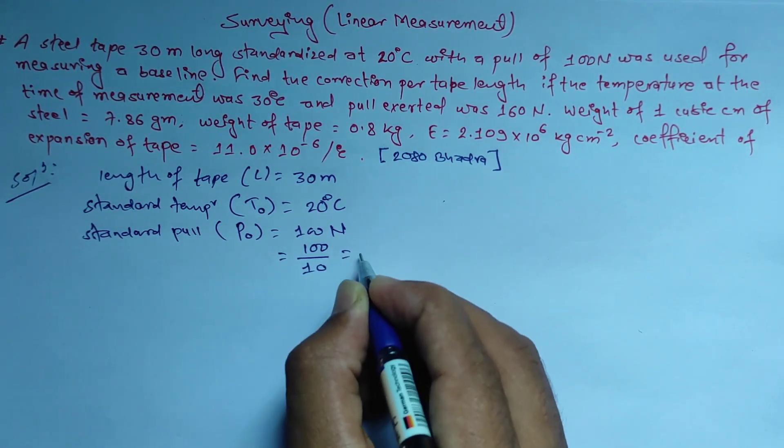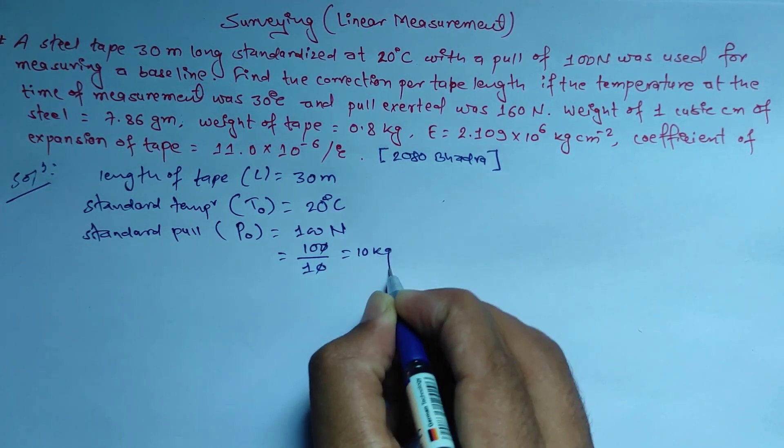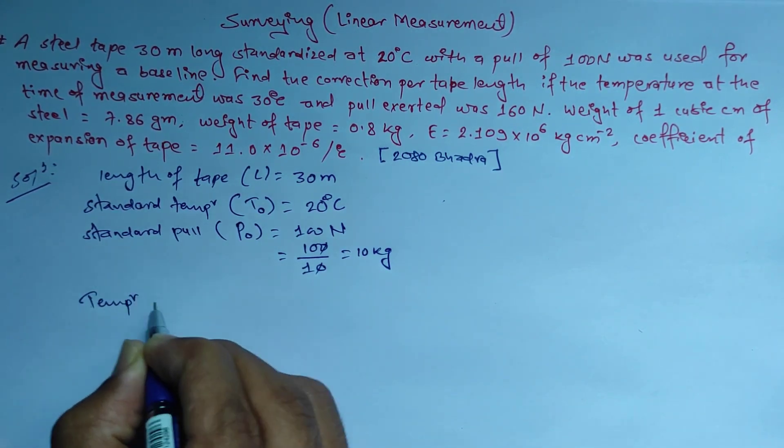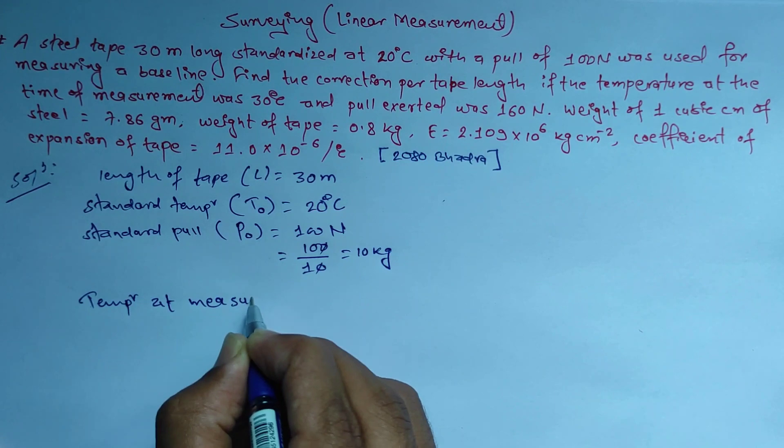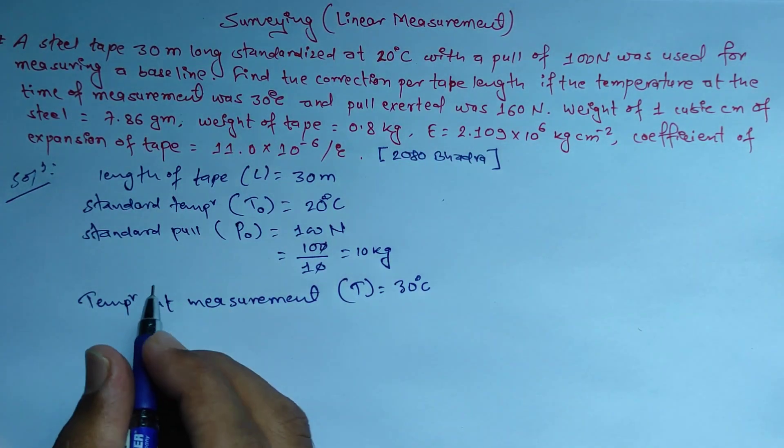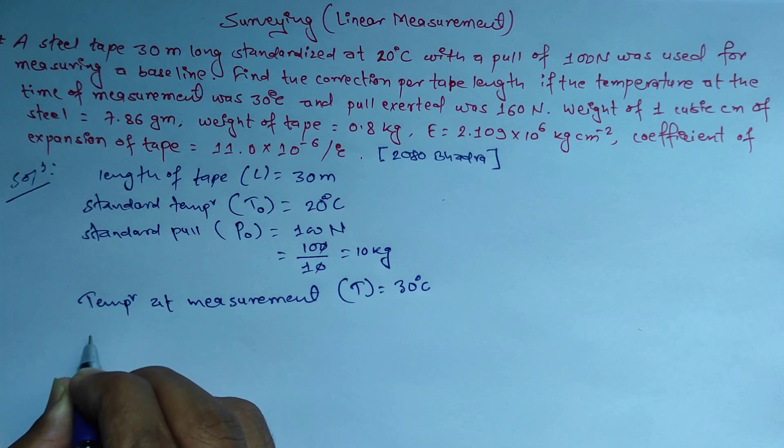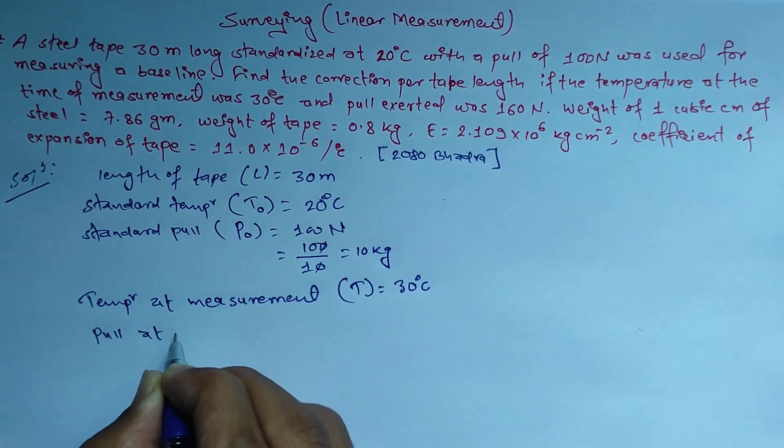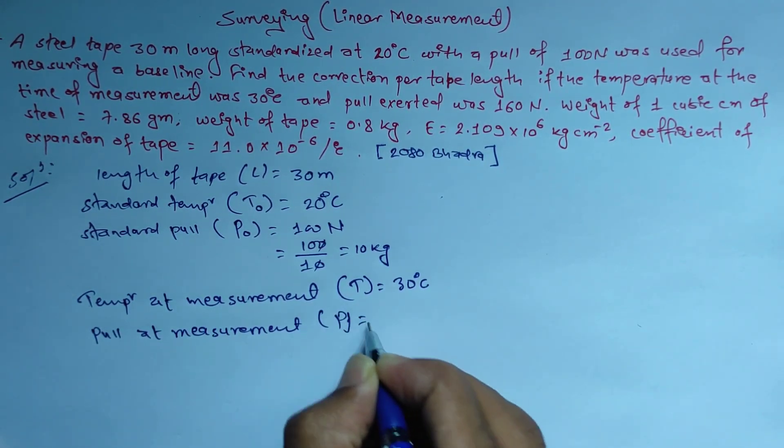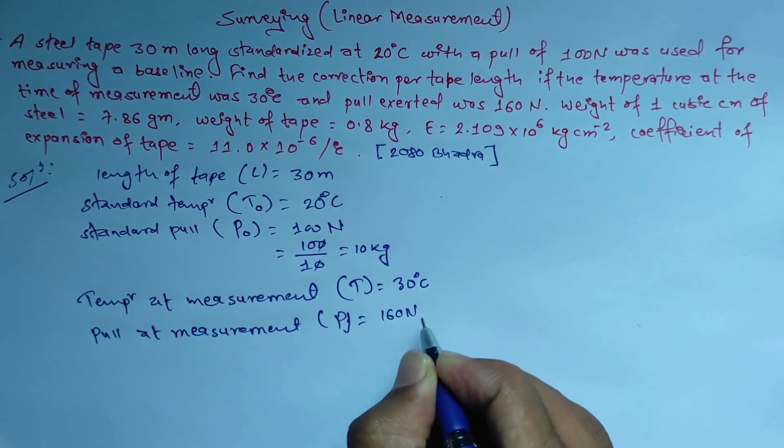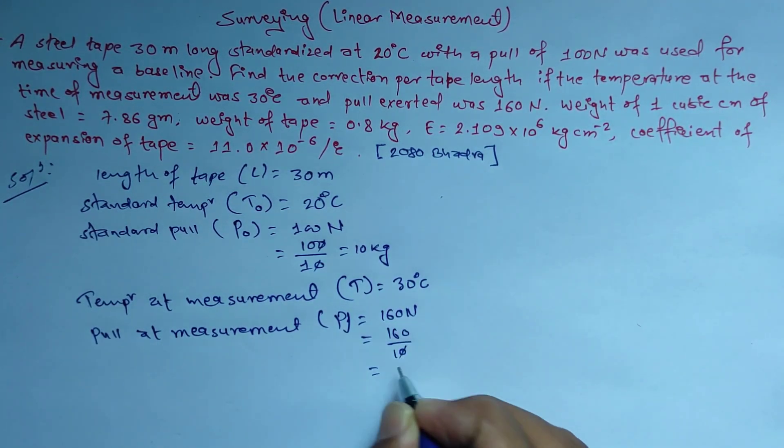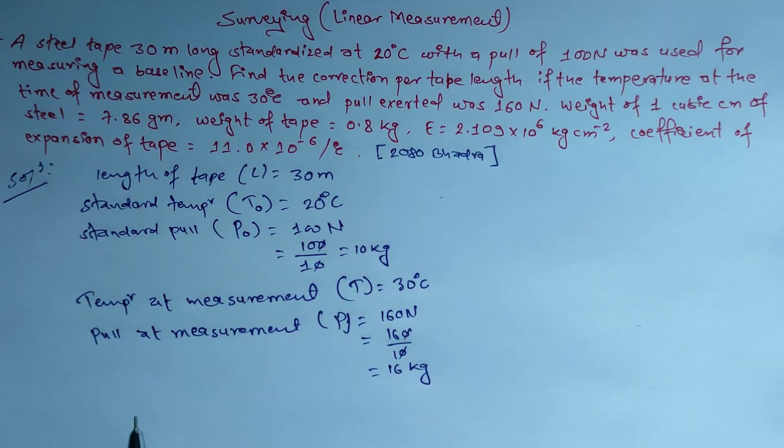Temperature at measurement equals 30 degrees Celsius. Pull at measurement P equals 160 Newton. We need to convert Newton to kg, so divide by 10. This gives us 10 kg for standard pull and 16 kg for measurement pull.